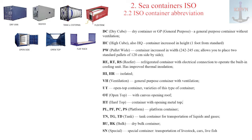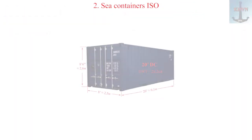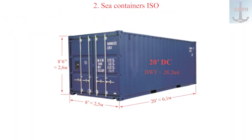ISO container abbreviations: DC — dry cube or dry container, also known as GP (general purpose) — a general purpose container without ventilation. HC — high cube, also HQ — a container increased in height by 1 foot from standard. 20-foot DC — TEU, 20-foot equivalent unit, standard.